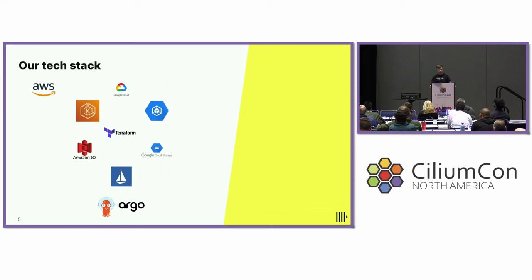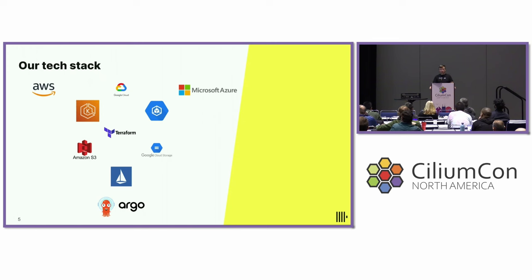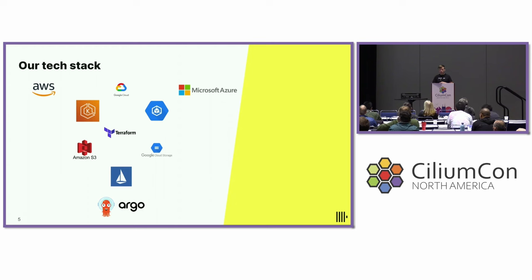About our stack: we have our cloud deployed in AWS and GCP. Next year, we will open it for Azure. We use managed Kubernetes services and Terraform for infrastructure as code. Our compute and storage are separated — in AWS we use S3 for storing ClickHouse data, and in GCP we use Google Cloud Storage. We use Istio for data ingress; Istio is a single point of entry to our cloud. And we use Argo CD for managing our Kubernetes manifests.